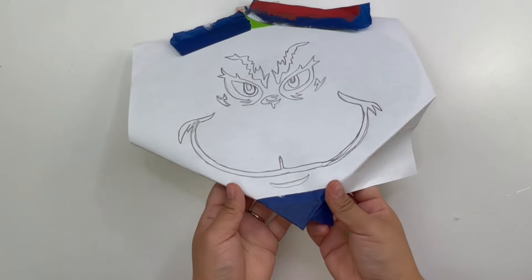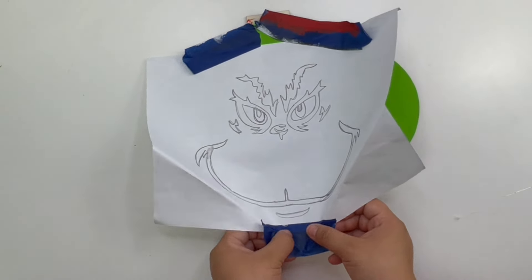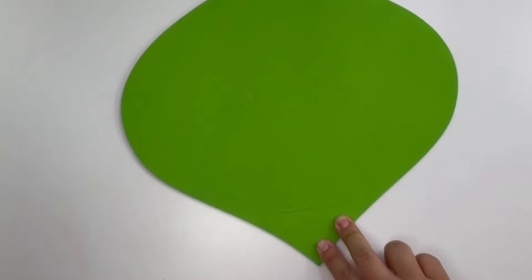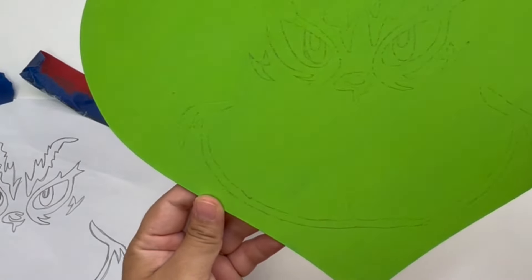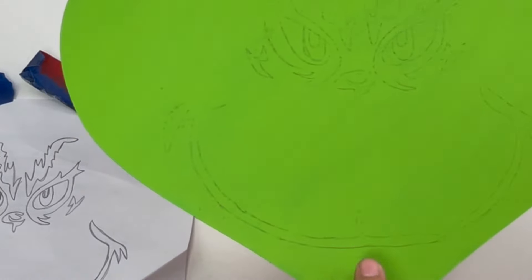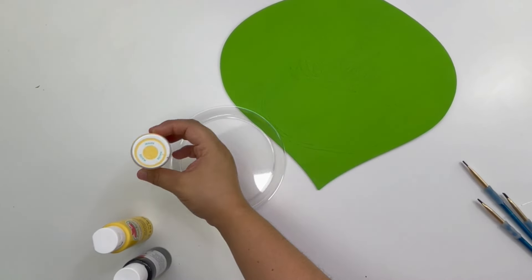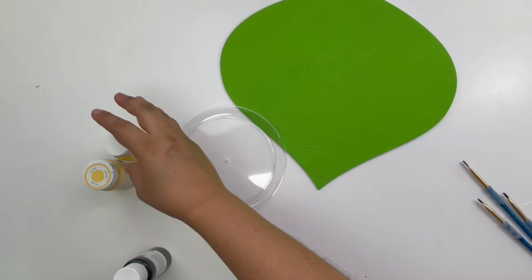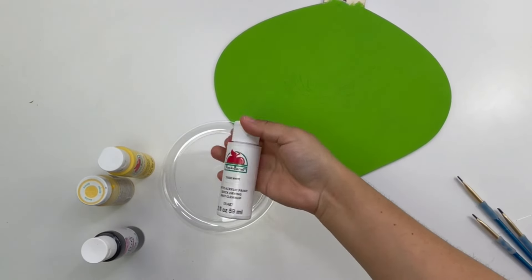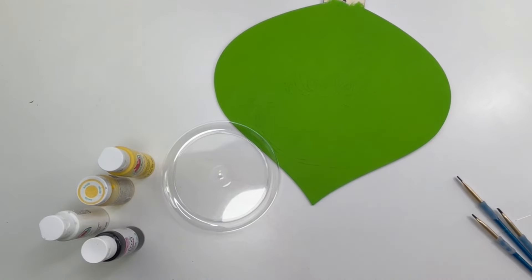Once I am done I'm going to carefully remove the paper and voila, now you have a Grinch face. Hopefully you can see it here but on my end I can. Using these paints and small tiny brushes I'm going to now start painting the face. I started off with the smile which was the easiest.